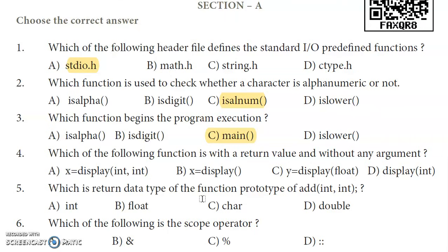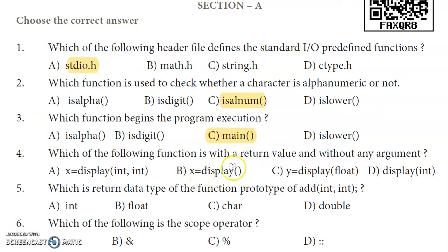Fourth question: which of the following function has a return value and without any argument? Without any argument means empty brackets — no arguments are passed. And with a return value, that value must be stored in a variable. So option B — x equal to display — is the correct answer.